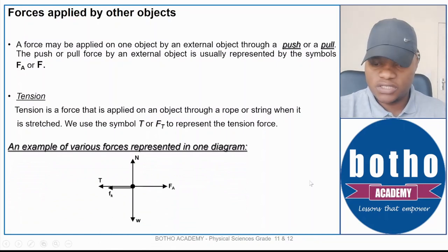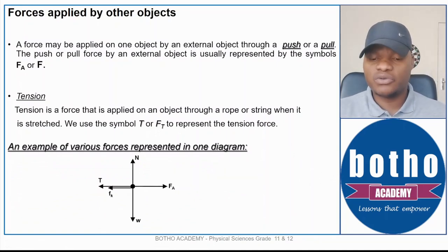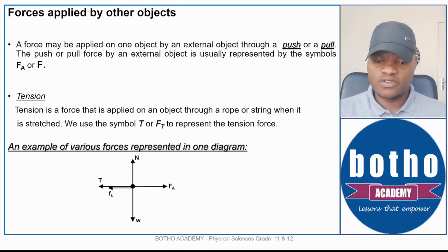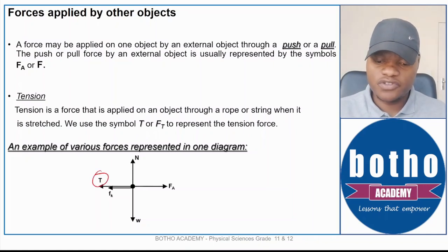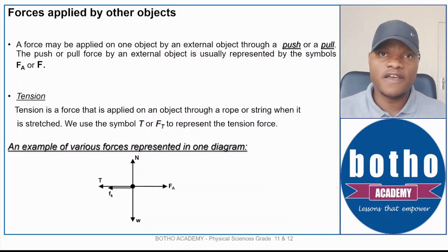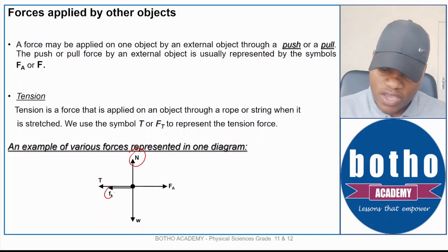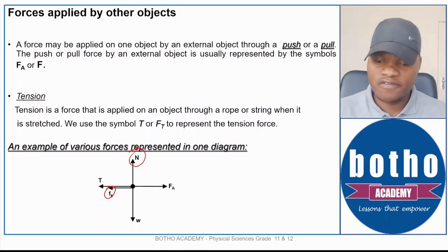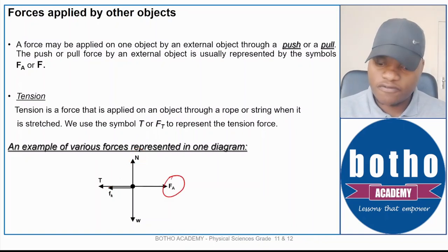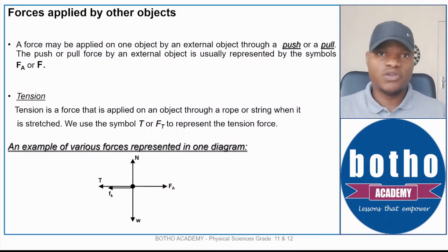Here is a situation where an object experiences all five forces simultaneously: tension acting to the left, kinetic friction (fk) since the object is moving, weight acting downward, normal force acting upward indicating contact with a surface, and an applied force. The presence of normal force and kinetic friction both confirm that the object is in contact with a surface and is moving.